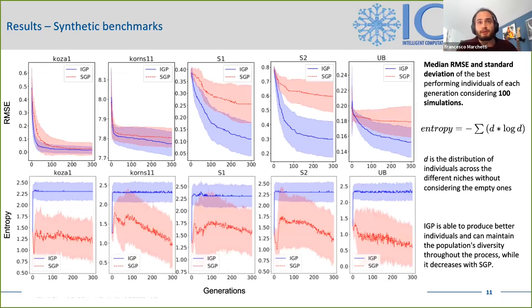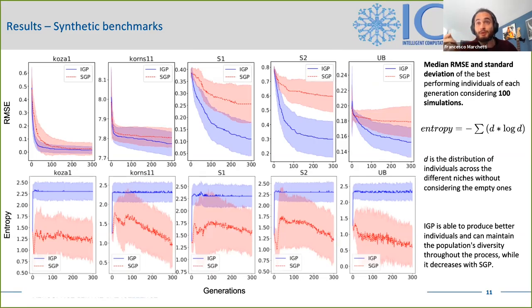Starting from the synthetic benchmarks, this plot represents the median value and standard deviation of the root mean square error and the entropy during the evolutionary process. Each benchmark was simulated 100 times. Looking at the root mean square error, it is clear how the IGP always outperformed the SGP by converging to lower values. The entropy was used to measure population diversity during the evolutionary process, evaluated using the distribution D of individuals across the different niches — without considering empty ones — representing the percentage of individuals inside each niche. For this comparison, niches were created also in the SGP to evaluate entropy, but of course they weren't used. From these results, it can be seen how the IGP is able to maintain population entropy — so its diversity — approximately constant and at a high value throughout the process, while in the SGP it tends to diminish towards the end, meaning diversity is lost. A high value of entropy means a more diverse population, proving that promoting and maintaining population diversity helps to improve the results.